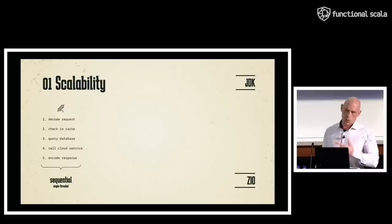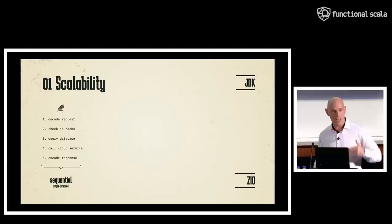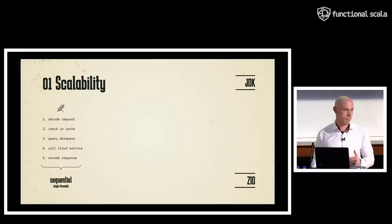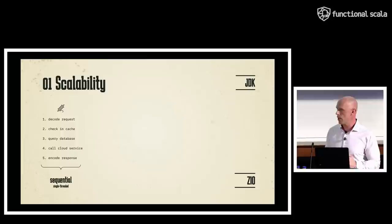The way we like to program in a web server model is sequentially, using imperative programming — do this, then this: decode the request, check the cache, query the database, call some cloud API, then build the response. Fundamentally, the nature of handling a request is sequential, and as a result, it's a very good fit for threaded programming. Threaded programming executes a series of instructions step by step, one after the other.